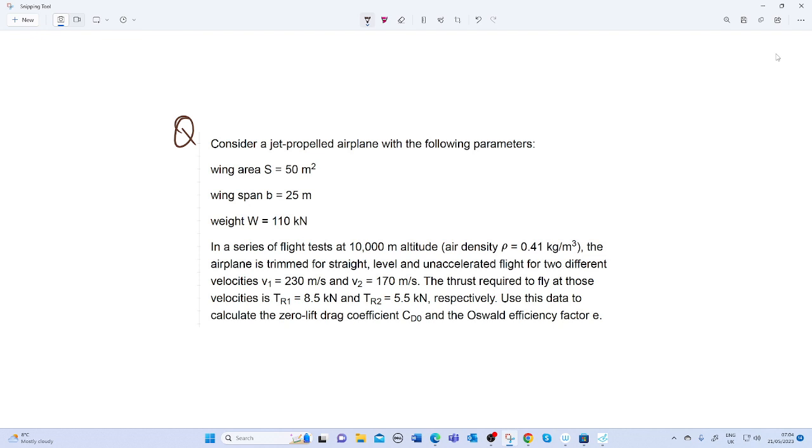Now today we have a jet propelled aircraft with all the parameters: S which is the wing area equals 50 m², the span b equals 25 meters, the weight W equals 110 kilonewtons which is 1.1 times 10 to the 4 newtons.